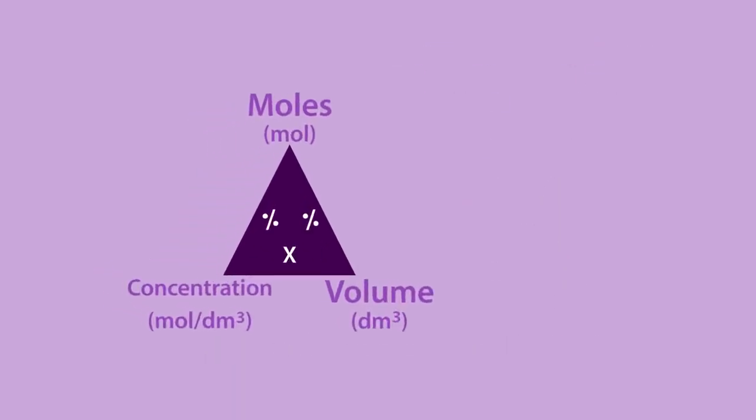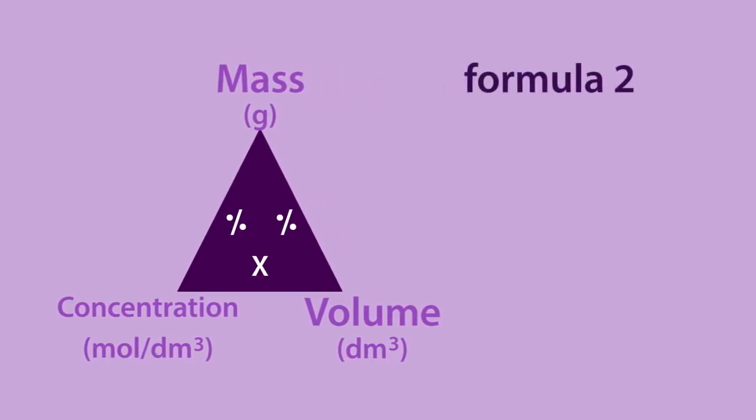The second way of calculating the concentration is very similar, except sometimes we use a mass of a substance divided by volume rather than a mole of a substance. The formula is mass divided by volume and has the unit grams per decimeter cubed rather than moles per decimeter cubed. Its formula triangle looks like this.